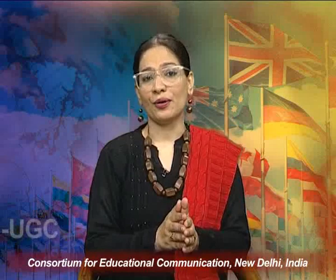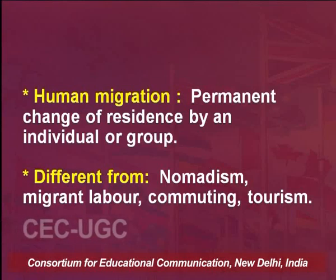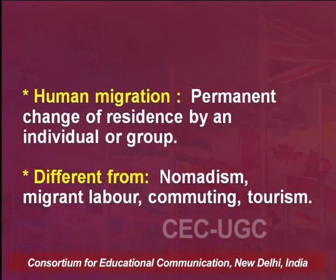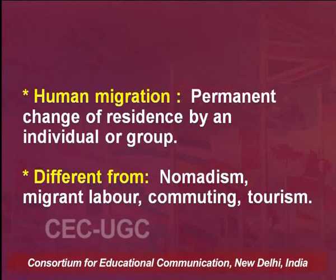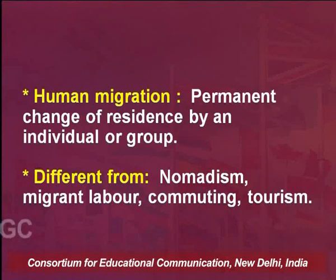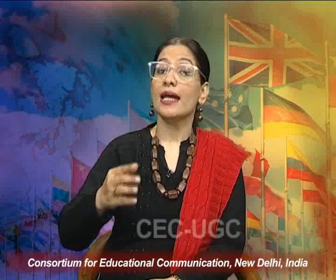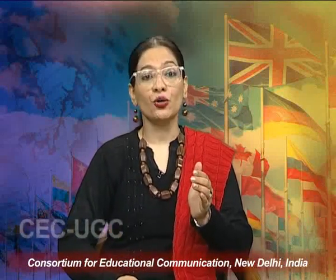At the outset, let us ask ourselves: how do we define migration, or human migration? Human migration involves permanent change of residence or place of living by an individual or a group. This transition must be distinguished from terms like nomadism, migrant labour, commuting, and tourism, which also involve change of accommodation or nature of residence. However, when this transition is a permanent change of residence, that comes under the category of human migration.